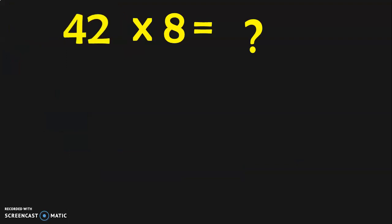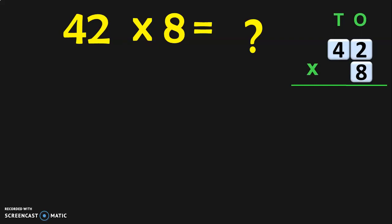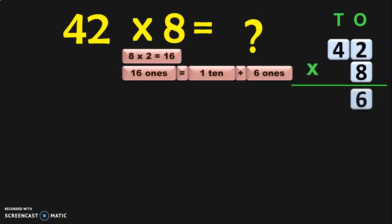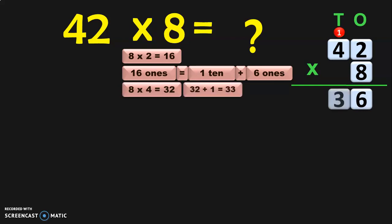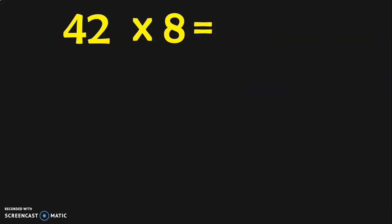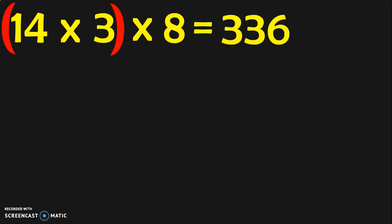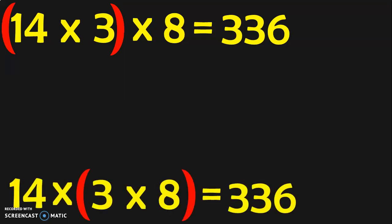Now we have to find out 42 into 8. 8 into 2 in the 1s place is 16 — that is 1 ten plus 6 ones; 6 carry over 1. 8 fours are 32; 32 plus 1 is 33. So you get the answer to be 336 in this case also. Writing the original form: 14 into 3 into 8 is equal to 336, which verifies the property that three numbers can be grouped in any order and multiplied, and the answer will remain the same.